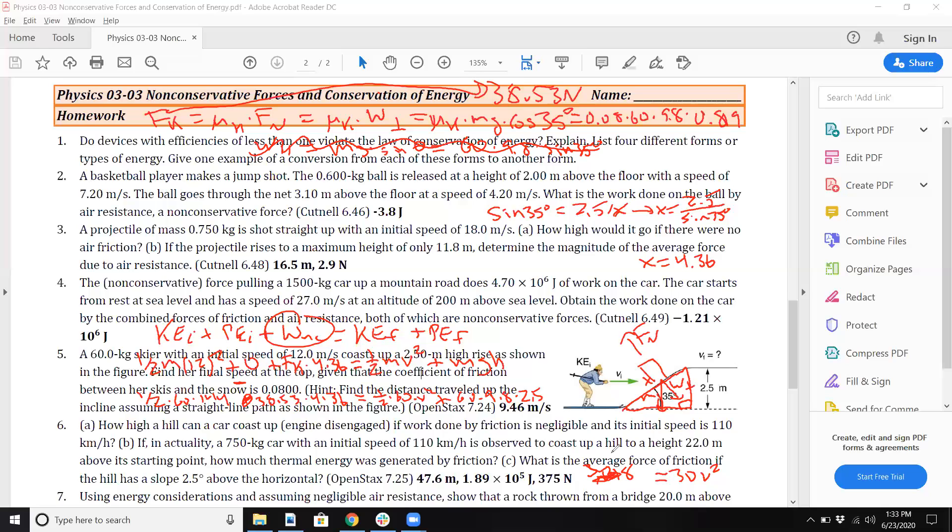So we got 30 times 144 minus 38.53 times 4.36, then minus 60 times 9.8 times 2.5. Yeah, I think we're going to find out, because now I get 2,682. Divide that by 30, I get 89.4. And then let me square root that. Yep, I get 9.46.